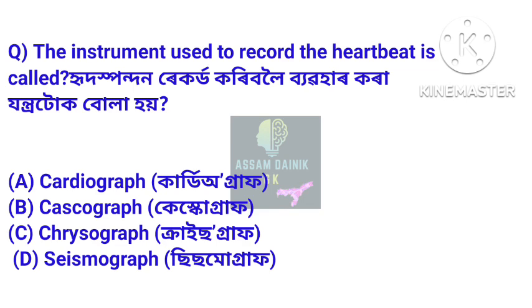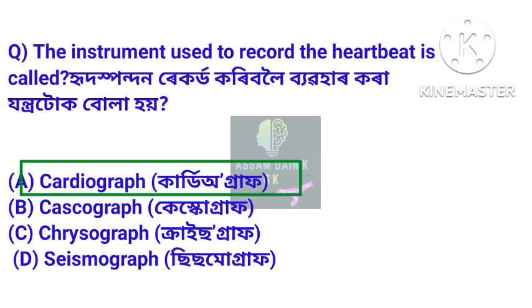The instrument used to record the heartbeat is called what? Answer: Cardiograph. A cardiograph is the instrument used to record heartbeats.